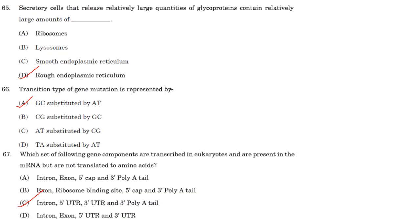Secretory cells that release large quantities of glycoproteins contain relatively large amounts of rough endoplasmic reticulum, because polypeptides destined to become glycoproteins are produced by ribosomes of the rough endoplasmic reticulum. The polypeptides enter the lumen of the rough ER for glycosylation, which is completed in the Golgi apparatus before secretion.